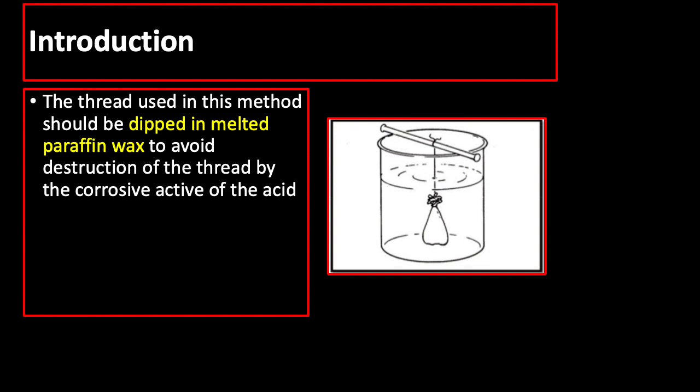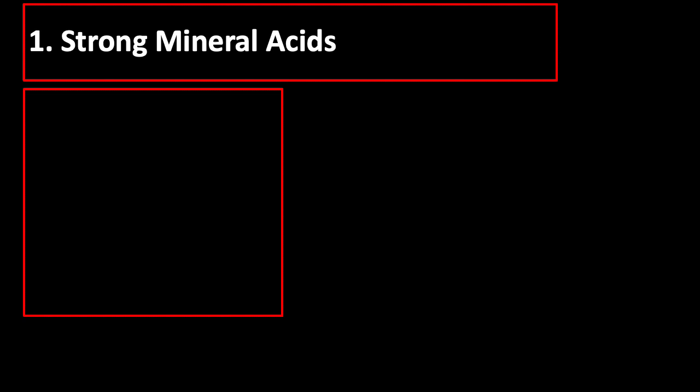As soon as fixation is complete, the selected pieces of tissues are usually placed in a gauze bag and suspended in liberal amounts of decalcifying solution by means of a thread to ensure complete decalcification and to protect the tissue from any precipitate that might settle at the bottom of the container. The thread used in this method should be dipped in melted paraffin wax to avoid destruction of the thread by the corrosive activity of the acid.